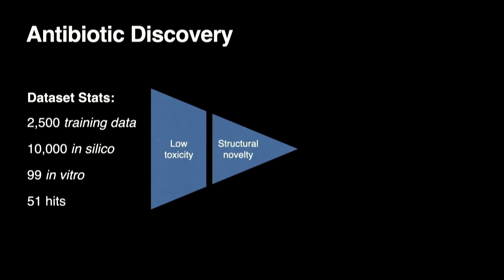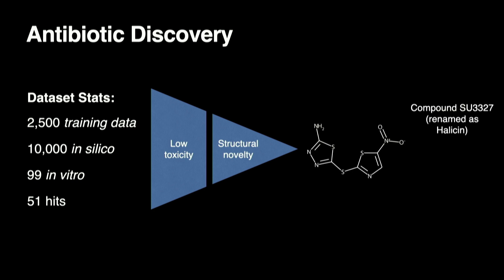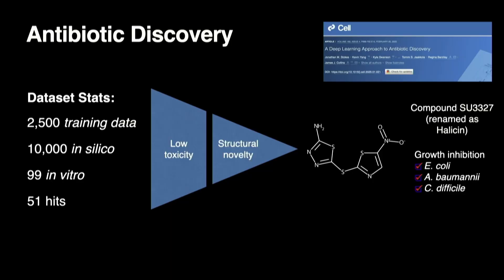You pick the top 100 and test those in a petri dish, and potentially you might get hits. Then you do sanity checks — you don't want something that's toxic to the human body even if it's toxic to bacteria, and you want it to be structurally novel because if it already exists you're just rediscovering the wheel. If you do all this, you might find a molecule called halicin. Halicin turned out to be a good drug against E. coli — the thing you trained on — but also works against two other types of bacteria with resistance. This was the first time deep learning was used to find a new antibiotic.